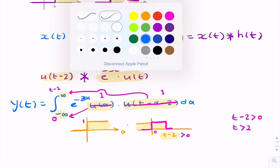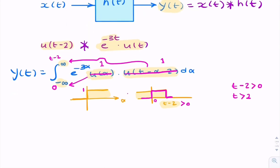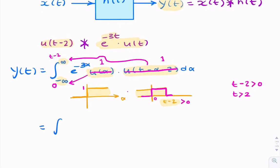So now we can go back to our integration. But this time, we replace our limits with our new limits, zero and t minus 2. And the unit step functions have both disappeared. And we simply have e to the minus 3α, dα.